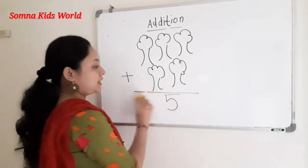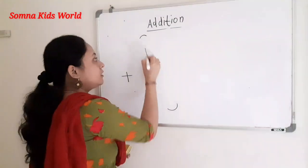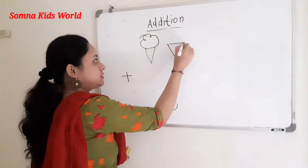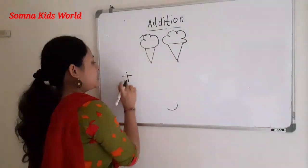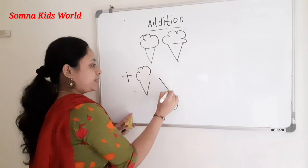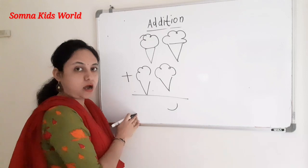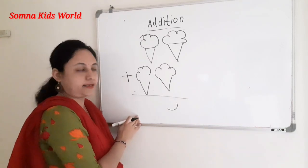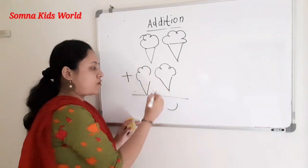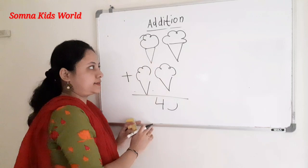Here is one more example using the picture method. We are having one ice cream, two ice creams, plus one ice cream, two. Now you need to count the total: one, two, three, four. So how many ice creams are we having? Four ice creams.